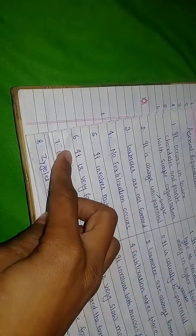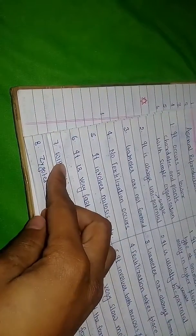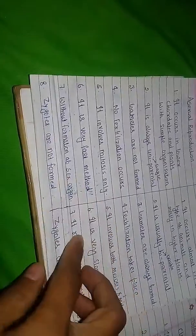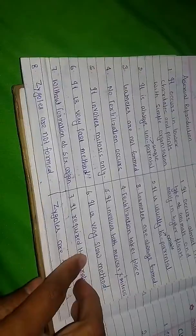And the sixth point is: asexual reproduction is a very fast method. But in sexual reproduction, it is a very slow method for reproduction.